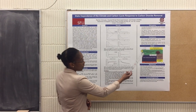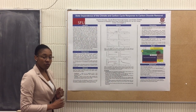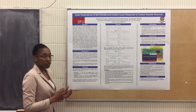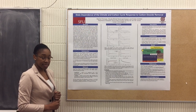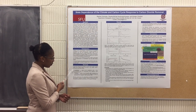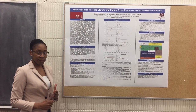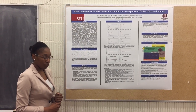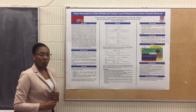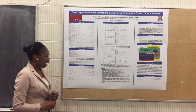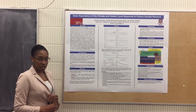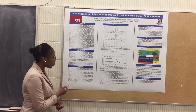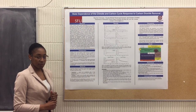We used the University of Victoria Earth System Climate Model to perform two simulations: the equilibrium simulation and the transient simulation, which represent two different climate system states. The equilibrium simulation represents a climate system that is in equilibrium with a carbon dioxide concentration that is twice the pre-industrial level — that's 560 parts per million — whereas the transient simulation represents a climate system where the carbon dioxide concentration increases at one percent per year from the pre-industrial level (280 parts per million) to twice the pre-industrial level (560 parts per million).